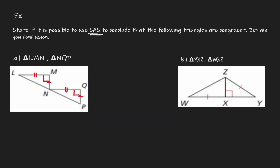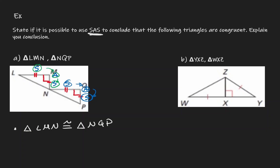This is a good candidate — let's check if the order follows. LM is congruent to NQ, so this side is congruent to that side, then we have a congruent angle, and then this other side congruent to the other side. The order follows: side-angle-side for the first triangle, and side-angle-side for the second triangle as well. So this is enough information to conclude that triangle LMN is congruent to triangle NQP, and the reason is the side-angle-side congruence postulate.